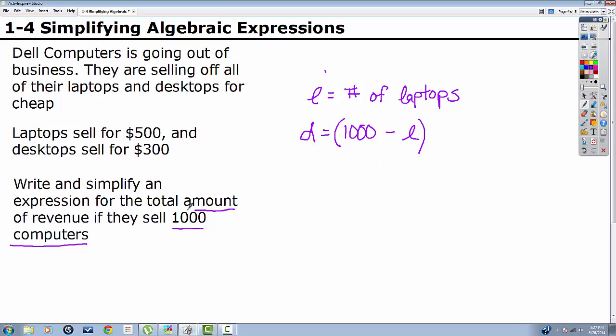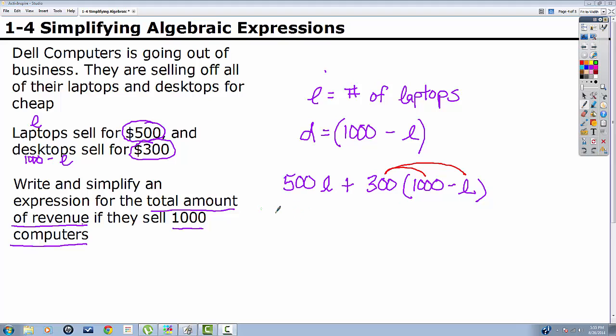Now we want to write an expression for the total amount of revenue. Revenue means money. How much money did we make? So laptops, that's L. Desktops, that's 1,000 minus L. And they're selling for this much and this much respectively. So that means 500 times each laptop plus 300 times each desktop is my total amount of revenue. Well, this looks just like that problem we just did. I got some parenthesis here and a number out front so I can distribute. 500L plus 300,000 minus 300L.